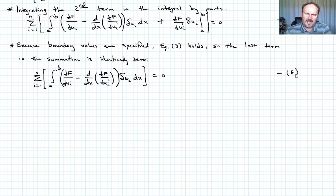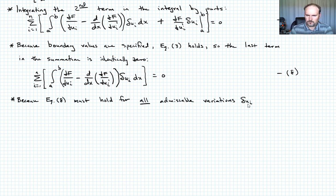Okay, so what can we say now? Well, equation eight has to hold for all admissible variations of delta ui. Okay, so what does that mean? Because equation eight must hold for all these admissible variations of delta ui, that means that every i term, so every pick a value of i, every quantity then in the brackets must be identically zero, okay?